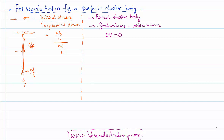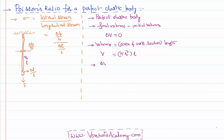The volume of the wire is equal to its area of cross-section multiplied by the length of the wire. Assuming the wire has radius r and a circular cross-section, the area of cross-section is pi r squared, and let l be the length of the wire. Now I want to calculate the change in volume with respect to the original volume.